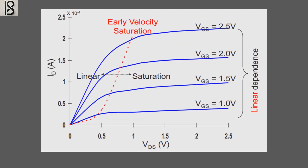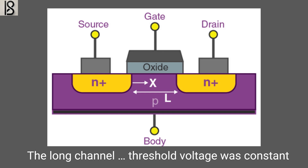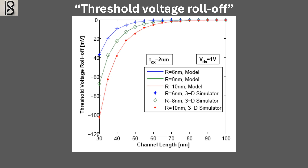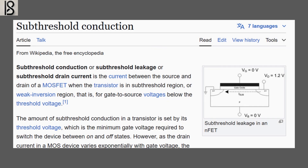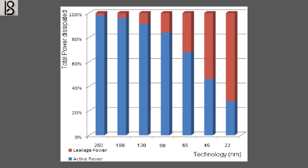The short channel effects come in two forms. First, there is the threshold voltage — the voltage at which the gate opens and allows current to flow between the source and the drain. When the channels were longer, the threshold voltage remained constant and unaffected by external factors. However, as the channel got shorter, we discovered that the threshold voltage was no longer constant and independent. Instead, it started decreasing — what we refer to as threshold voltage roll-off. This leads to a problem called sub-threshold leakage: when the gate voltage drops below the threshold, a small amount of current still flows like a dripping faucet. The lower the threshold voltage, the higher sub-threshold leakage becomes.